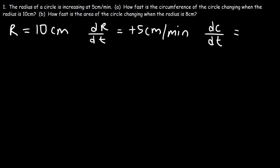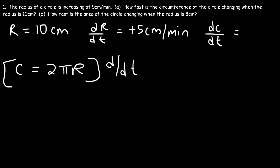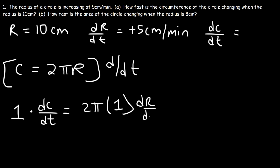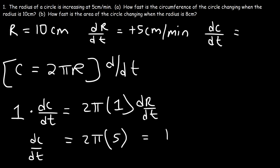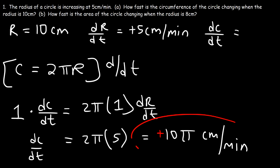We need an equation that has r, dr/dt, and dc/dt. The circumference of a circle is c = 2πr. Differentiating with respect to time, we get dc/dt = 2π · dr/dt. We don't need r in this example. Since dr/dt is 5, dc/dt = 2π × 5 = 10π centimeters per minute. Because it's positive, the circumference of the circle is increasing.